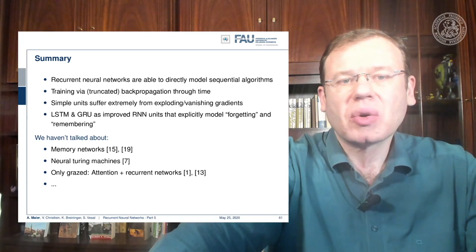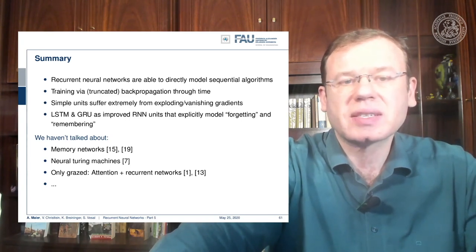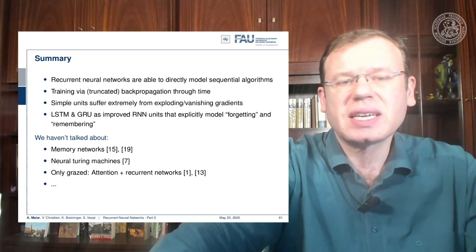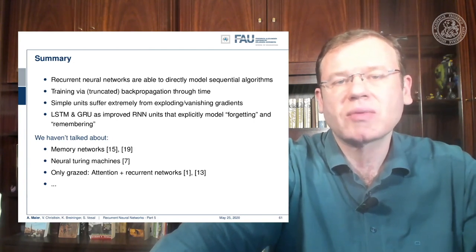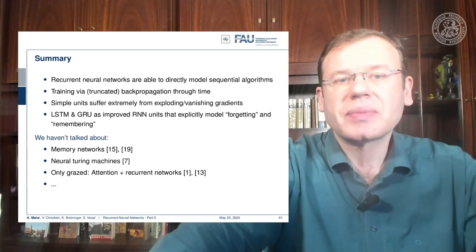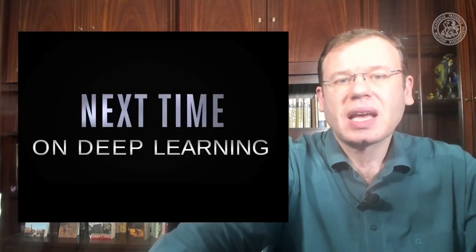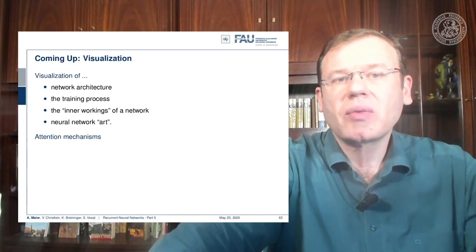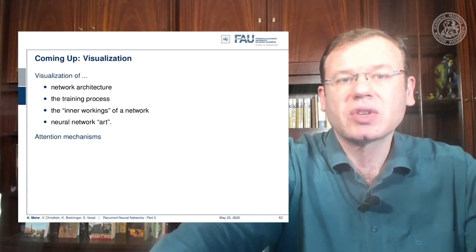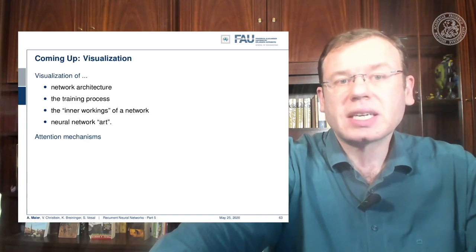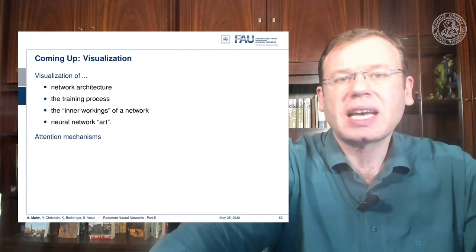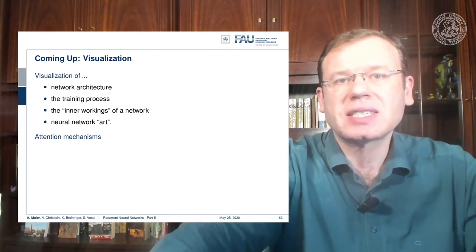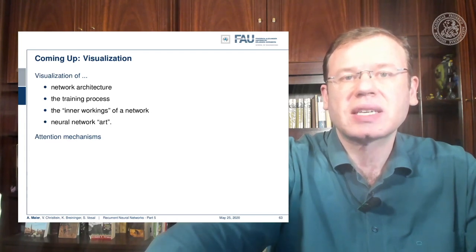What we haven't talked about is that there's many more developments that we can't cover in this short lecture, such as memory networks and neural Turing machines. What we only touched at the moment is attention and recurrent neural networks, but we'll talk a bit more about attention in one of the next videos. So next time in deep learning we want to talk about visualization, and in particular we want to talk about visualizing architectures, the training process, and of course also the inner workings of the network.